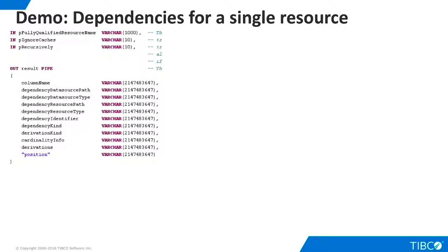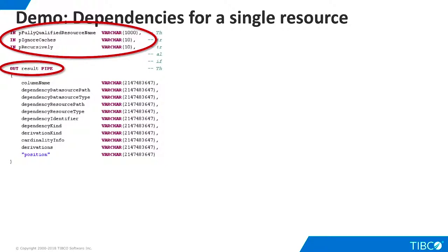Let's begin our demo by seeing how we can call the dependencies stored procedure for a single resource. We have written a very simple script whose signature is shown here. Our script accepts an input parameter that names the fully qualified TDV resource we want to analyze. We also provide two other parameters required by the dependencies procedure: the first tells whether or not we want to ignore caches in our analysis, and the second specifies whether or not we want to perform recursive analysis along the entire dependencies chain. The script returns an output result set defined by the dependencies procedure. You can find the meaning of each column on the Info tab of the dependencies procedure.